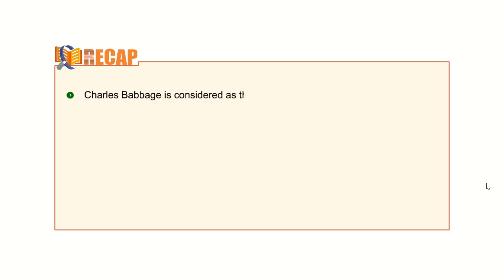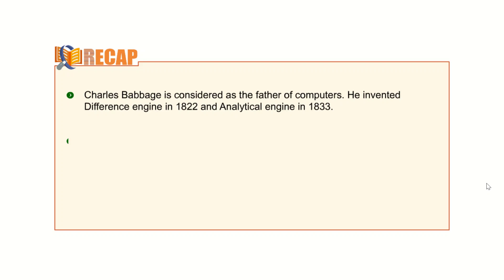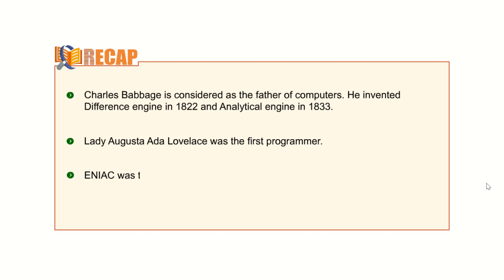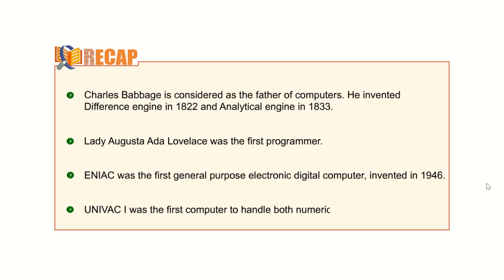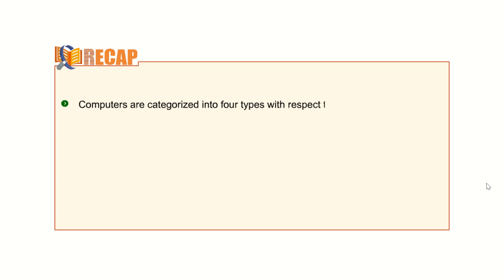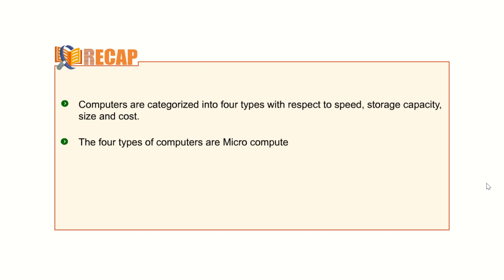Let us quickly glance through the key points discussed in this chapter. Charles Babbage is considered as the father of computers. He invented the Difference Engine in 1822 and the Analytical Engine in 1833. Lady Augusta Ada Lovelace was the first programmer. ENIAC was the first general-purpose electronic digital computer, invented in 1946. UNIVAC was the first computer to handle both numeric and text data. Computers are categorized into four types with respect to speed, storage, capacity, size and cost: microcomputers, minicomputers, mainframe computers and supercomputers.